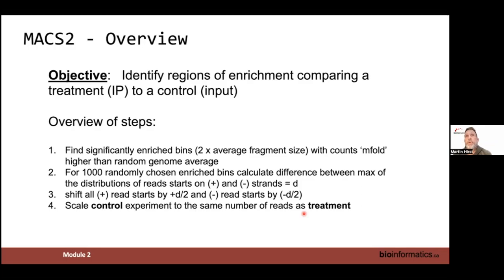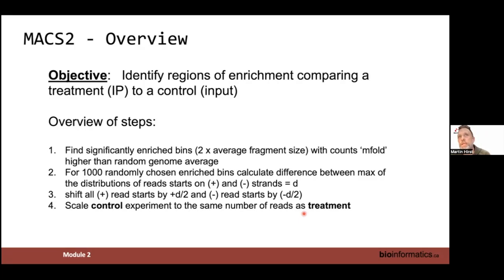How does MACS2 work? The objective is to identify regions of enrichment in your IP compared to control. In MACS2 nomenclature, the IP is called the 'treatment' and the input is called the 'control.' The input is the material taken before immunoprecipitation — for example, MNase-digested material from which a library is built. MACS2 scans for significantly enriched bins, where a bin is a region of arbitrary size such as 100, 200, or 1,000 base pairs.